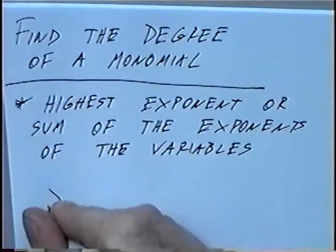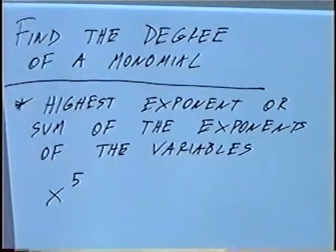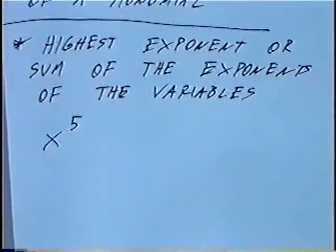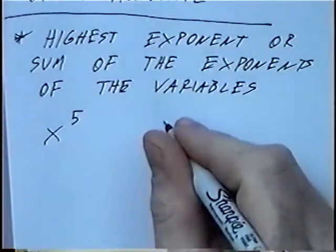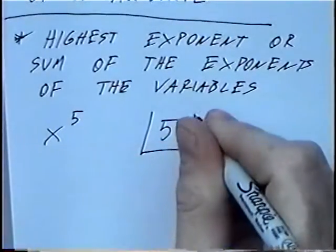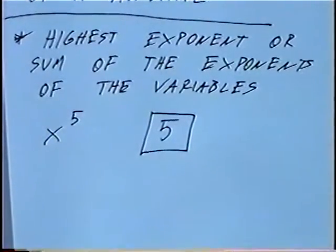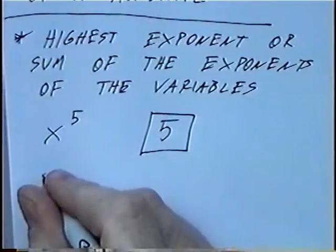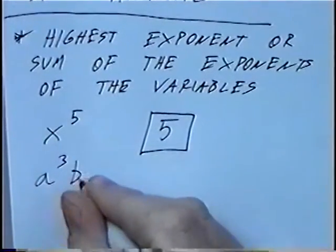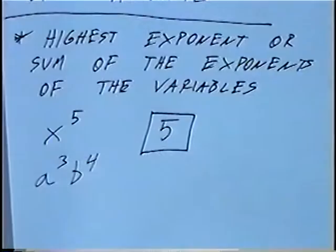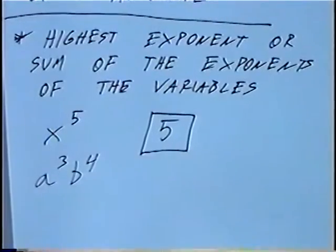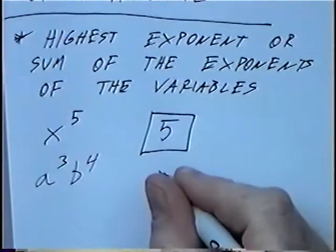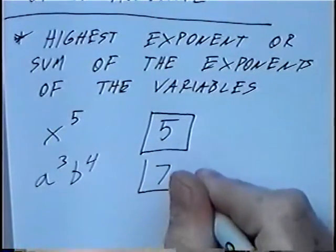First question: x to the fifth power. The degree is the highest exponent, so the degree would be five. Second question: a to the third power and b to the fourth power. You have two different variables side by side, so we take the sum of the exponents — three plus four — so the degree would be seven.